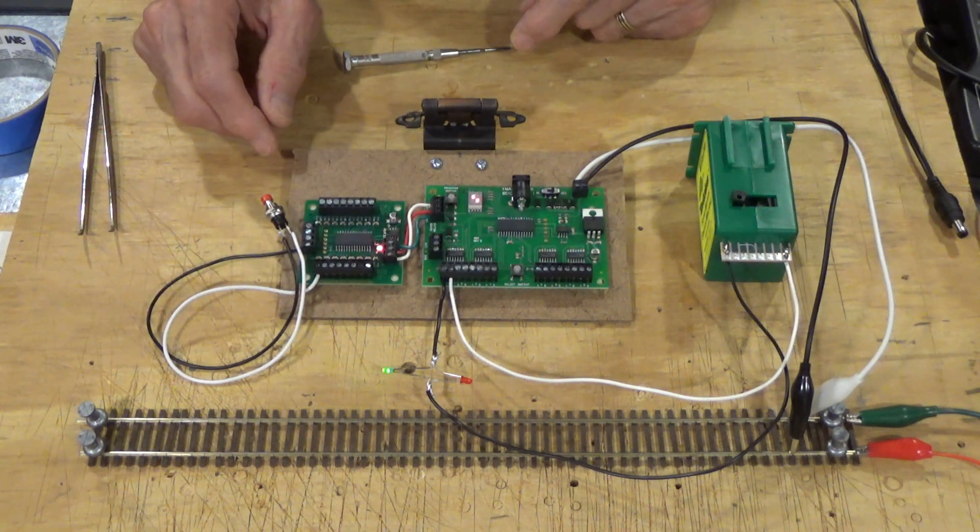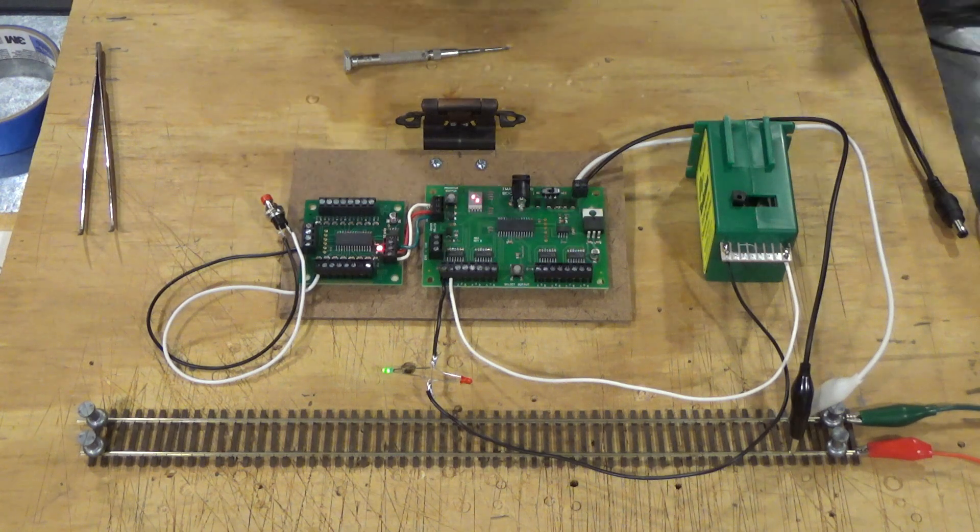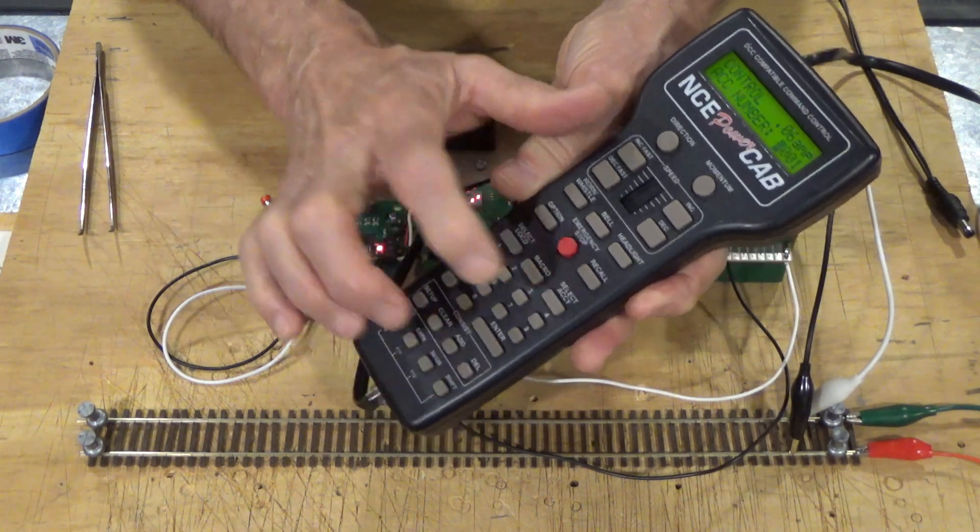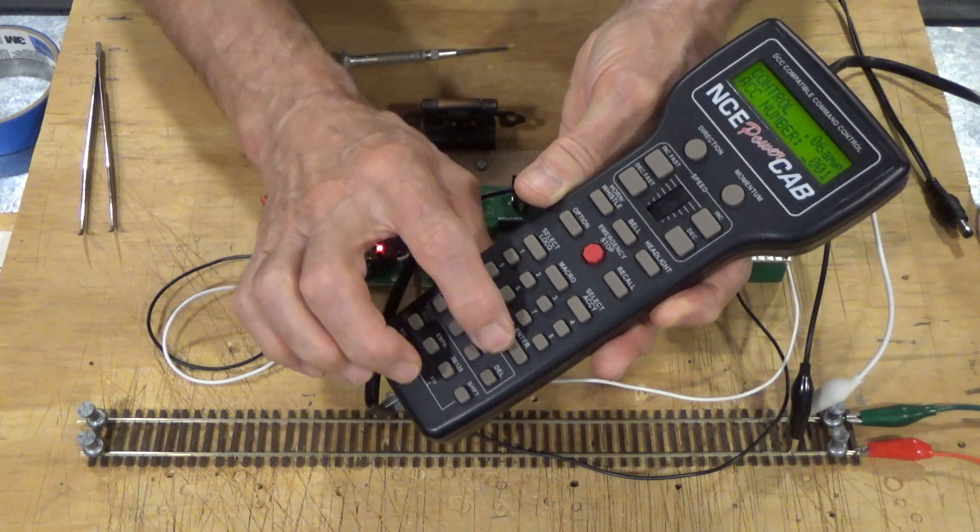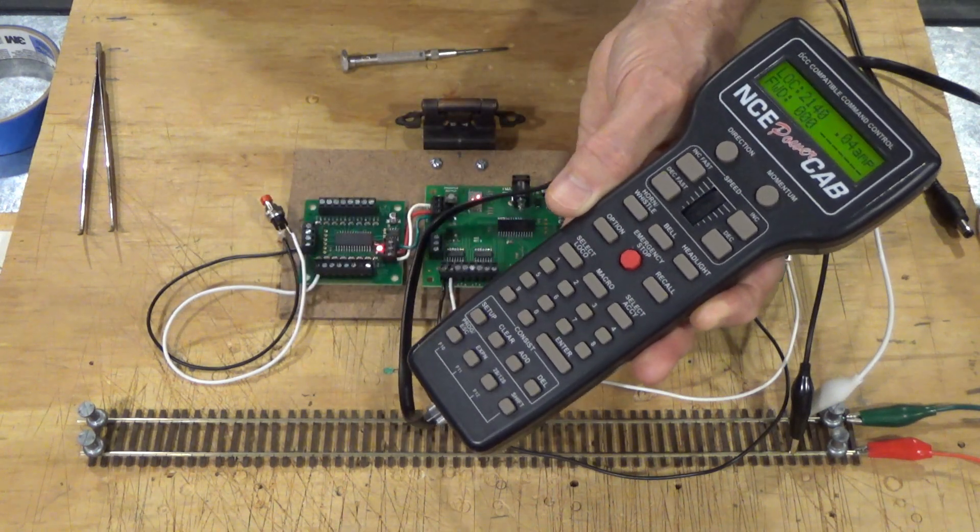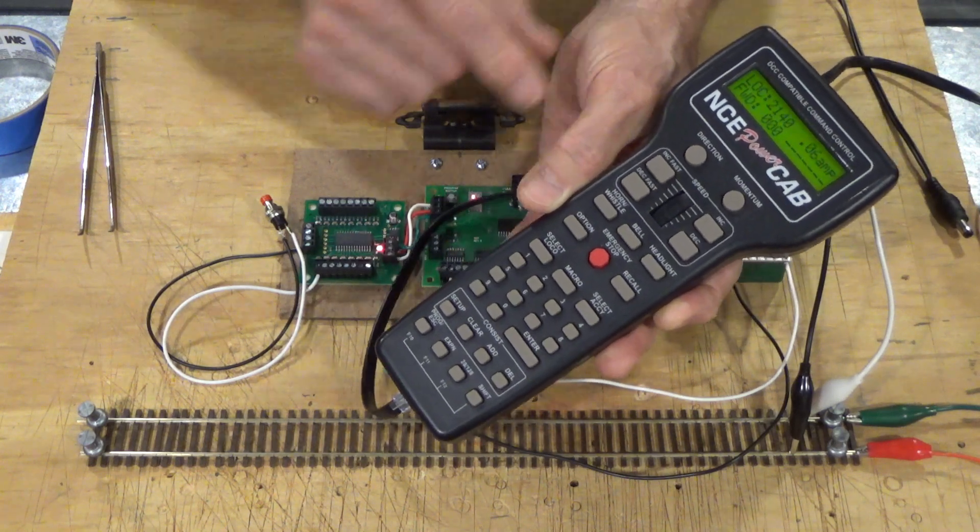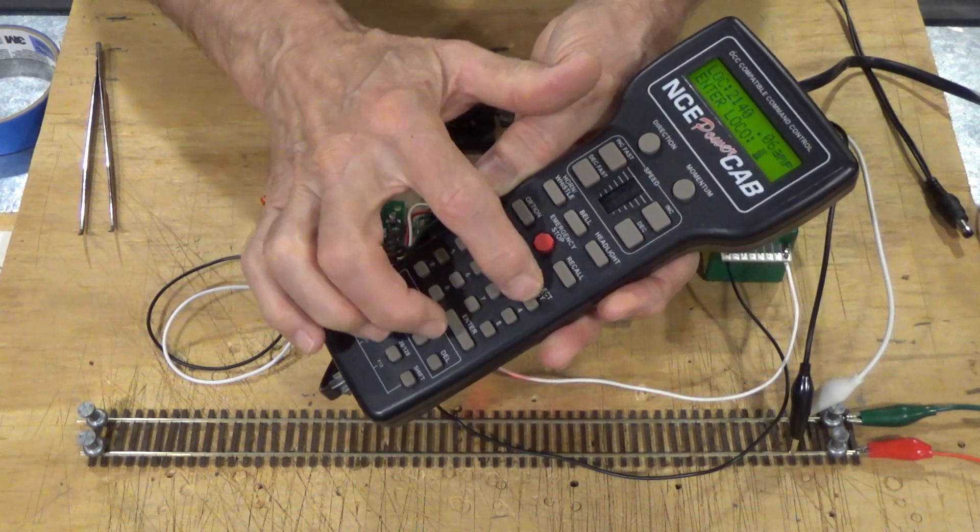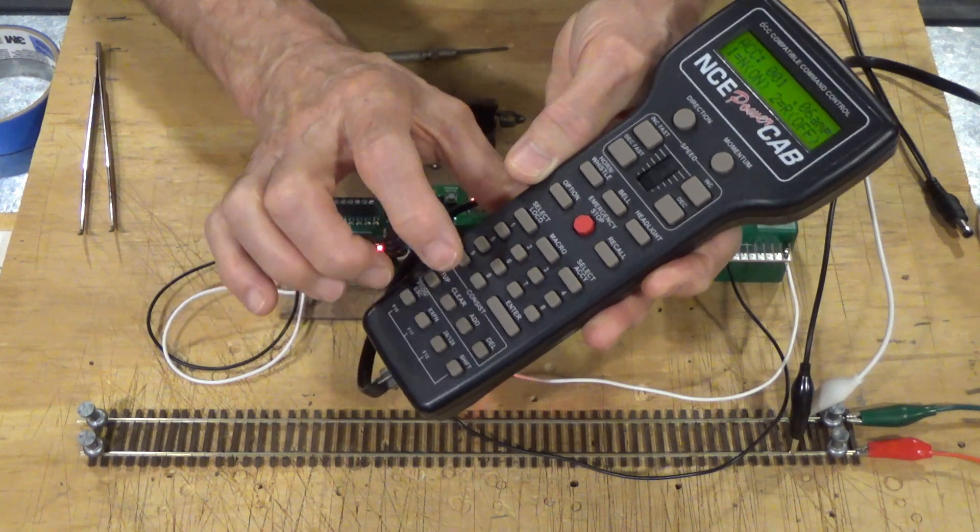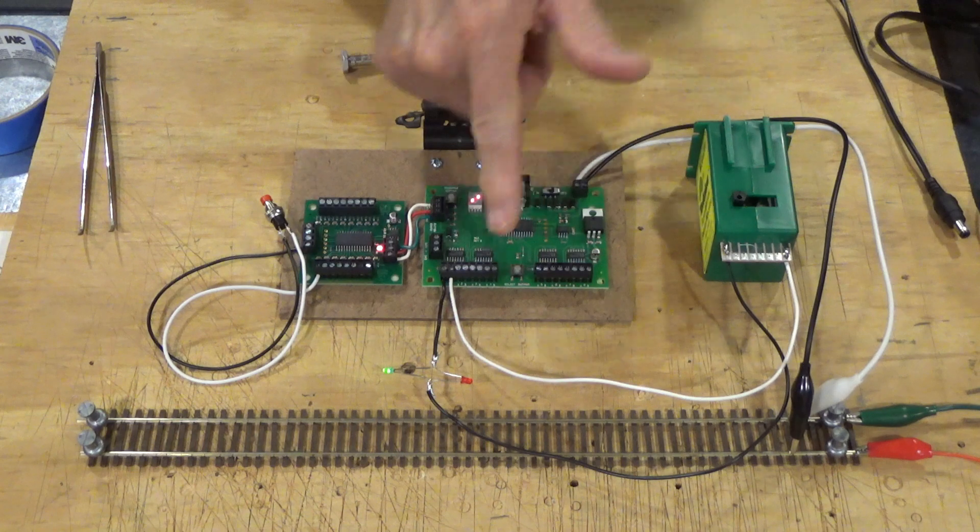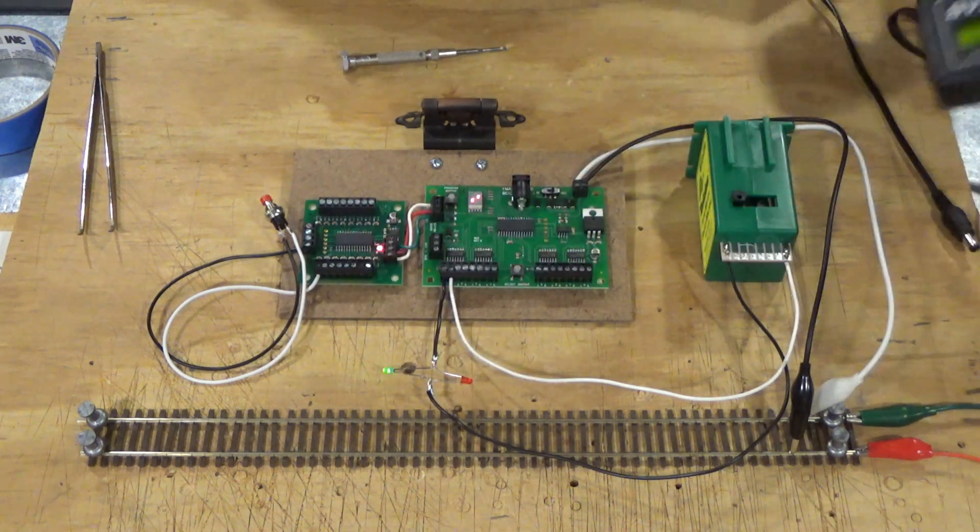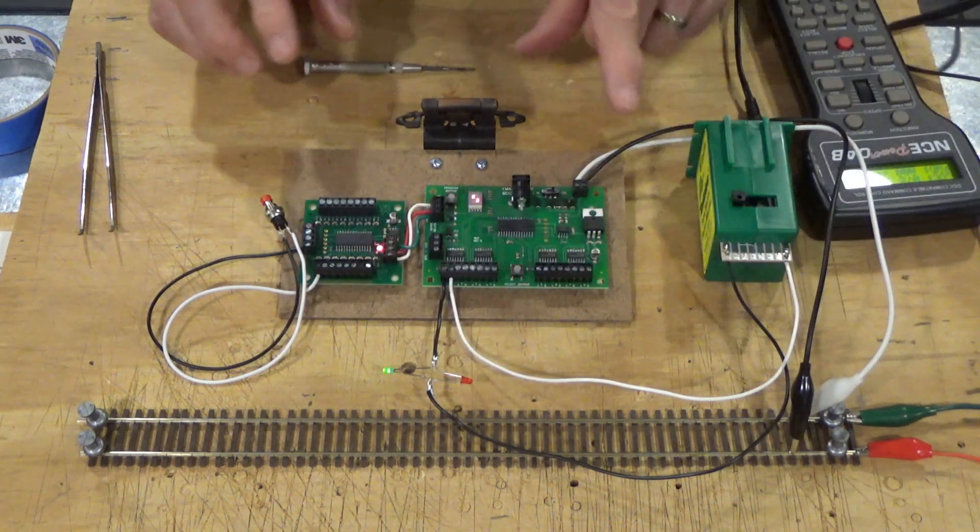Now another thing that I can do here is I can control this using a power cab throttle. So we can just select accessory 1, it comes up automatically for 1, hit enter, and it's going to ask me do I want normal or reverse position. I've hit position 2, or reverse, you can hear the turnout move. We can select that again, hit 1, and it will return to its other position. So you can use either a throttle to control your switch machines, or you can use the push buttons. That's with DCC controlling and providing power.